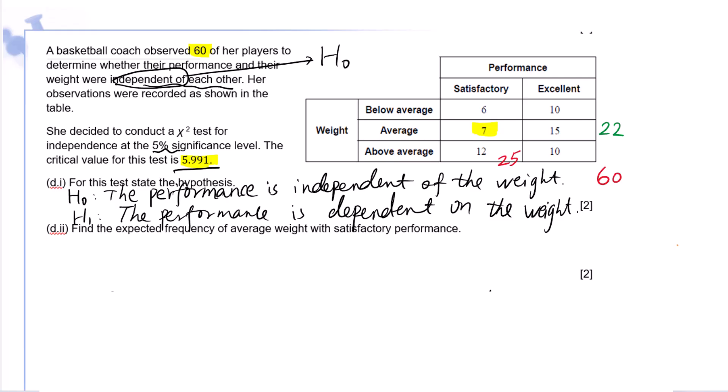Total for satisfactory is 25. Total player is 60. Therefore, 25 times 22 over 60 equals 9.17.